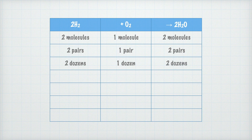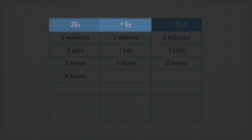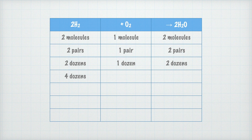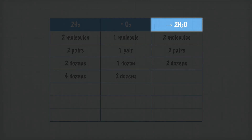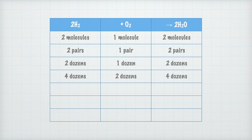If we instead have four dozen hydrogen molecules, how many dozens of oxygen molecules do we need? The quantity ratio tells us that the number of hydrogen molecules must be twice as large as the number of oxygen molecules. Therefore, we need half of four — that is, two dozen oxygen molecules. And the number of water molecules formed is exactly as large as the number of hydrogen molecules that react, so four dozen water molecules are formed.